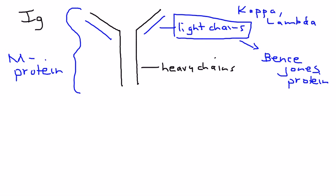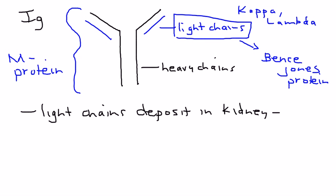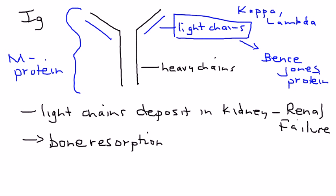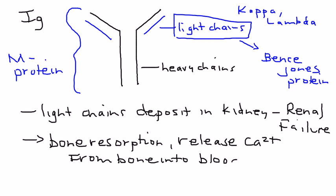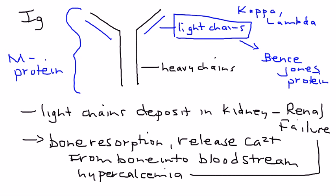Why is this important? Because in multiple myeloma, these light chains can deposit into the kidney, leading to renal failure — one of the biggest aspects of multiple myeloma in addition to bone destruction. When bone resorption occurs, osteoclasts release calcium from bone into the bloodstream, producing hypercalcemia. And hypercalcemia also contributes to renal failure.